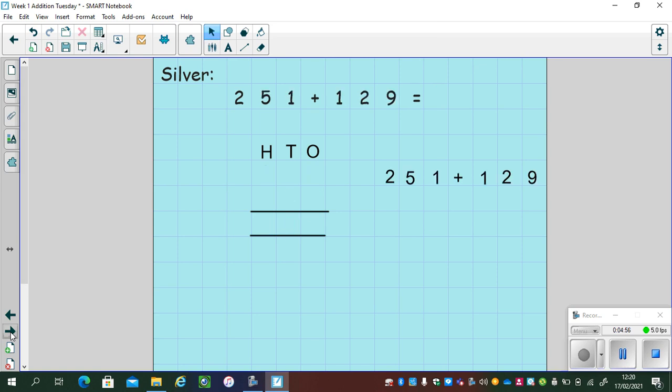Let's have a look at silver where we might get a three digit number add a three digit number, but we're still only doing one exchange. This example is 251 and 129. Let's lay out this number sentence into the correct place value columns first. So 251: one one, five tens, two hundreds. The add symbol goes at the side. 129: nine ones, two tens, and 100. Now that they're all laid out in the correct columns, I can go about and add them up.